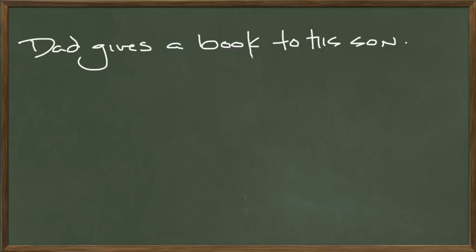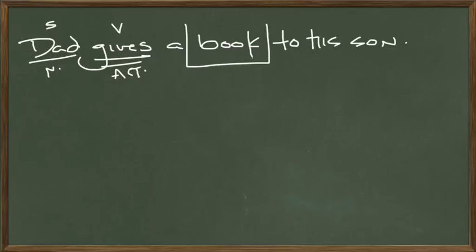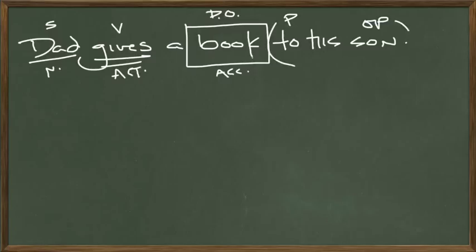Dad gives a book to his son. Dad is the subject of the sentence, nominative case. What's he doing? He's giving — that's the verb. He's giving what? He's giving a book. The book receives the action; it's being passed around, so it receives the action and is in the accusative case. Then we have the preposition 'to.' To whom? Son — object of the preposition. His son — prepositional phrase.